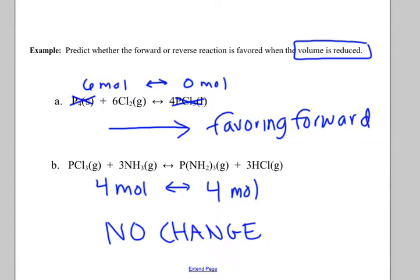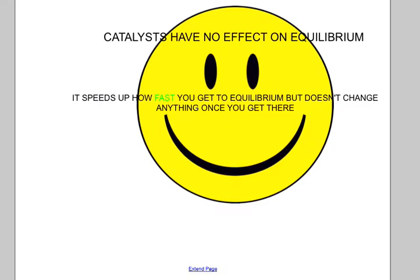Finally, we talked about how catalysts speed up reactions — you put them in and they come out. As far as Le Chatelier's is concerned, the reaction will still reach the same equilibrium; it's just going to get there faster. Think of it like giving the students in yesterday's block demo a bunch of coffee — the equilibrium would be the same, they'd just get there faster. So you need to remember that a catalyst has no effect on equilibrium. If asked how equilibrium will shift if you add a catalyst, the answer is always that it doesn't shift — equilibrium is established quicker, but it doesn't change.